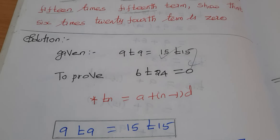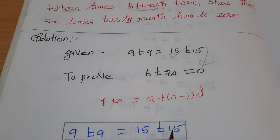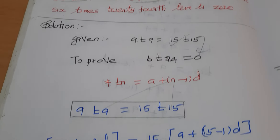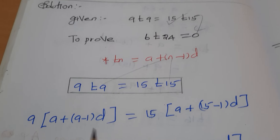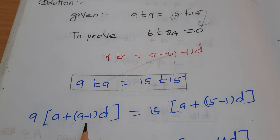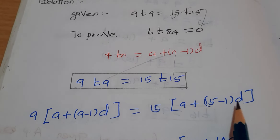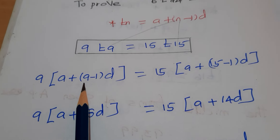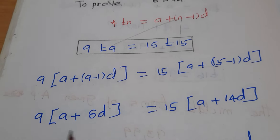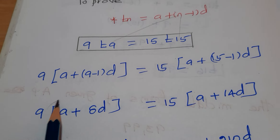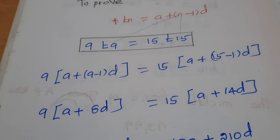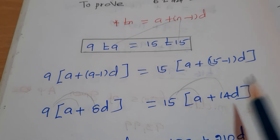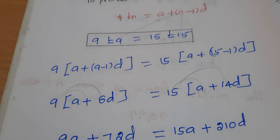Here n equals 9 and n equals 15. Applying the formula: a plus 9 minus 1 into d gives 9a plus 72d, and a plus 15 minus 1 into d gives 15a plus 210d.